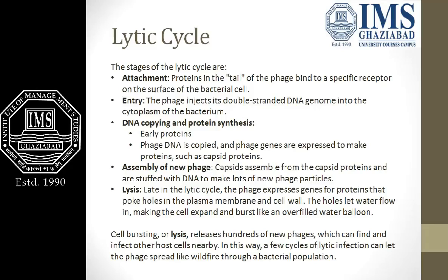The first step of the Lytic Cycle is attachment, also called adsorption. When the bacteriophage comes into contact with the bacterial cell, certain specific receptors are present on the bacteria as well as on the structure of the bacteriophage — specifically on the tail fibers. When those particular receptors get attached with the bacteriophage tail fibers, the bacteriophage starts landing on the bacterial cell surface. The attachment step is comprised of further sub-steps: adsorption, landing, settlement, attachment, and penetration.